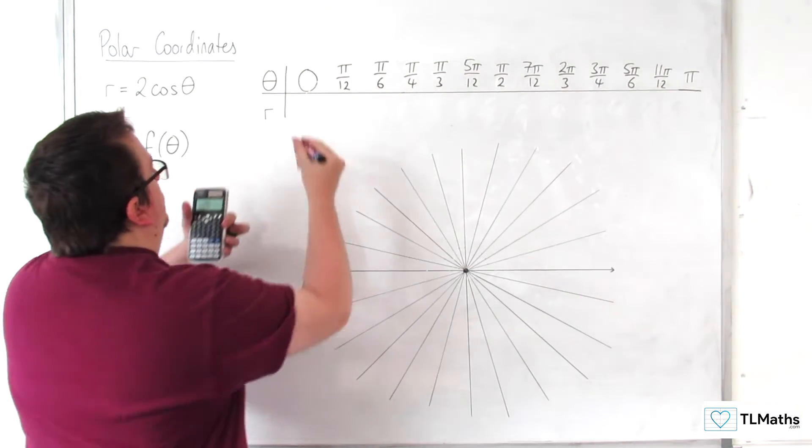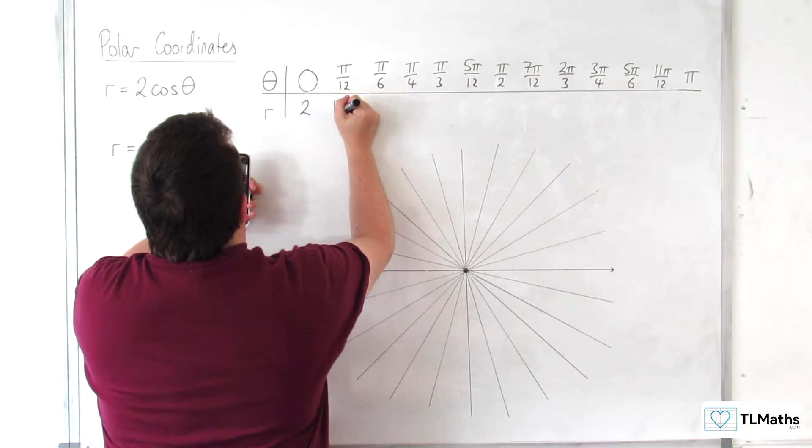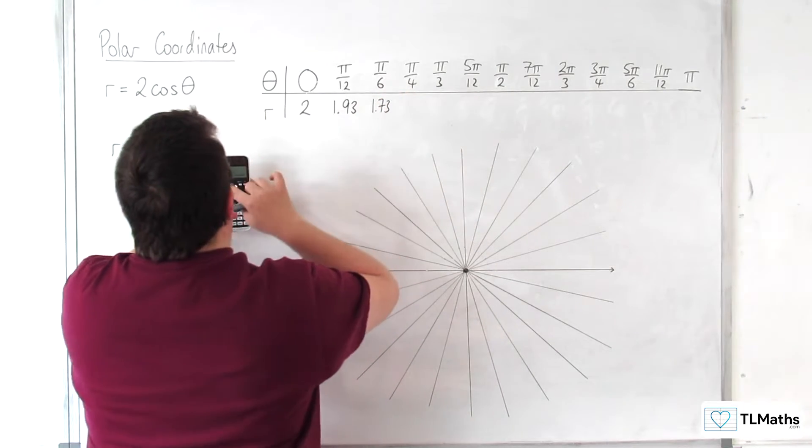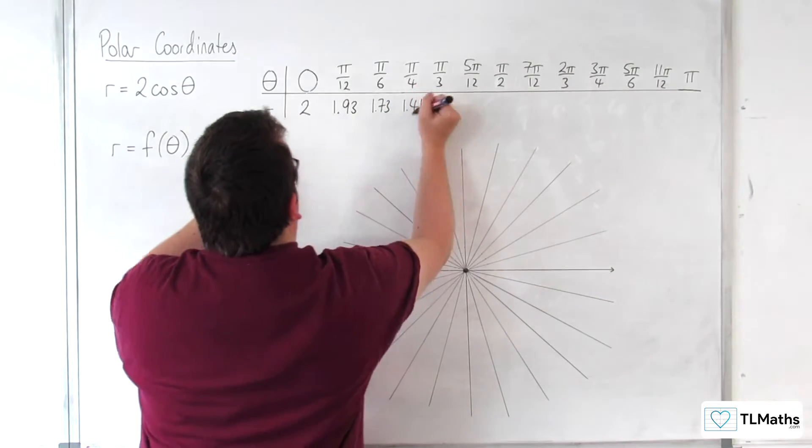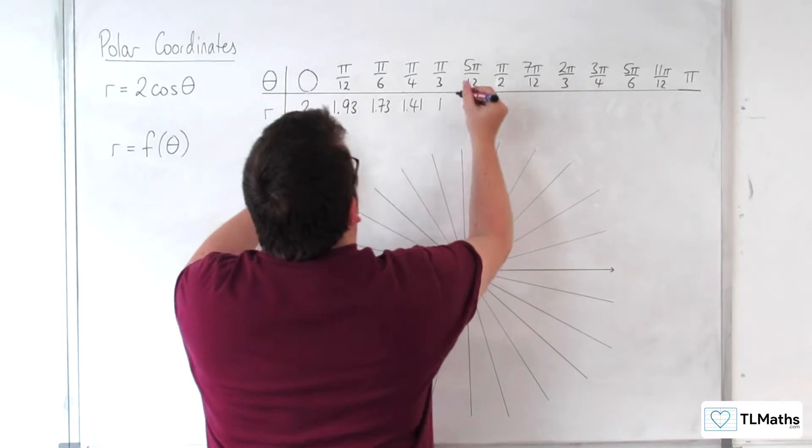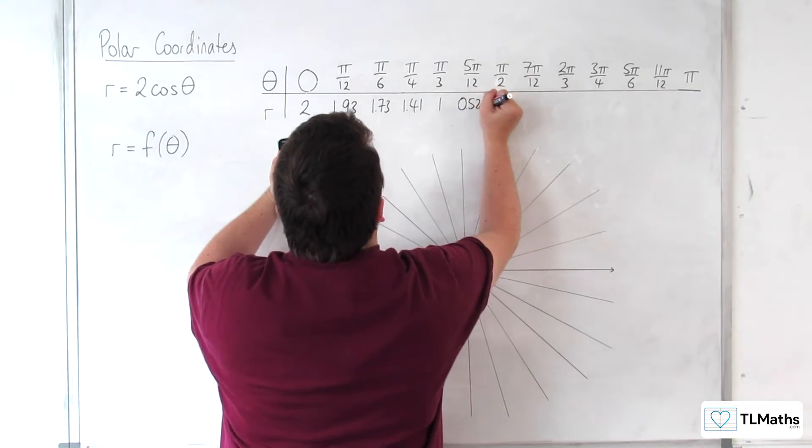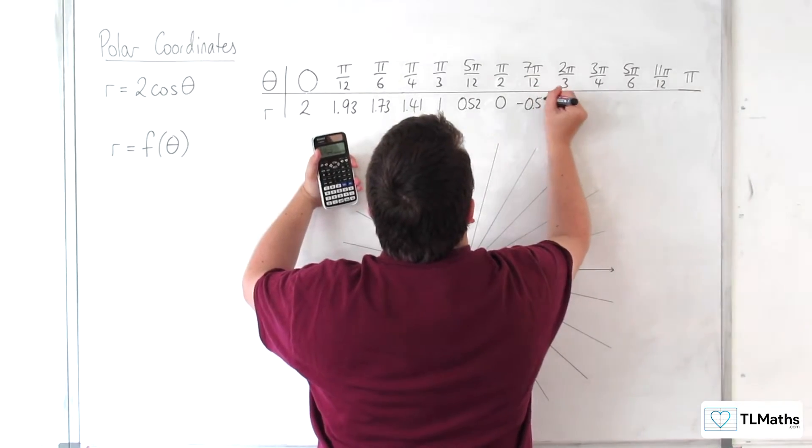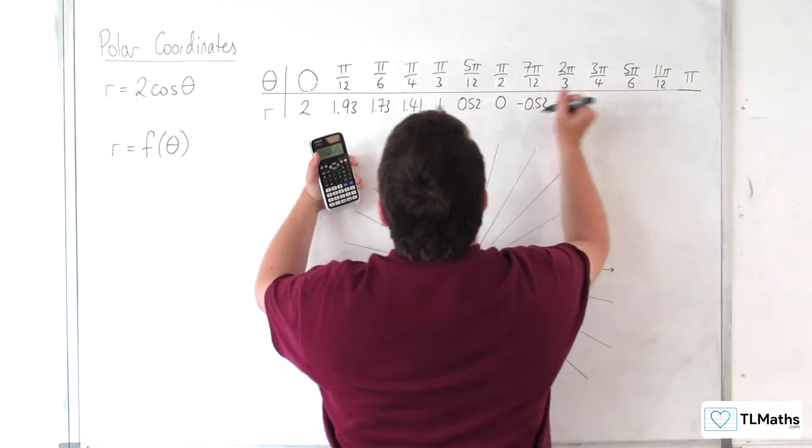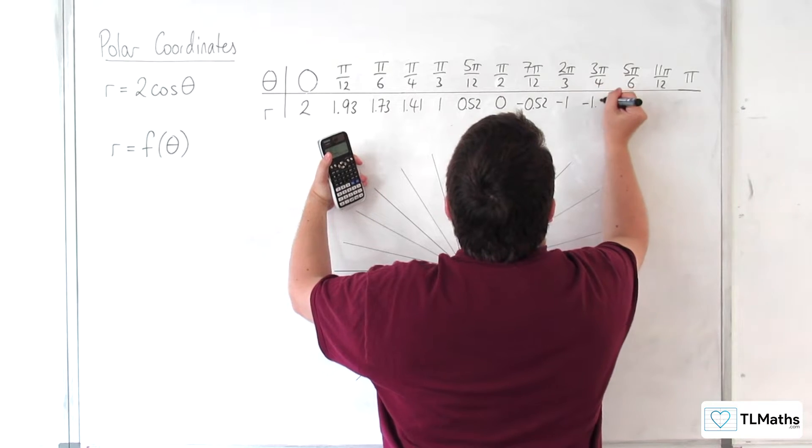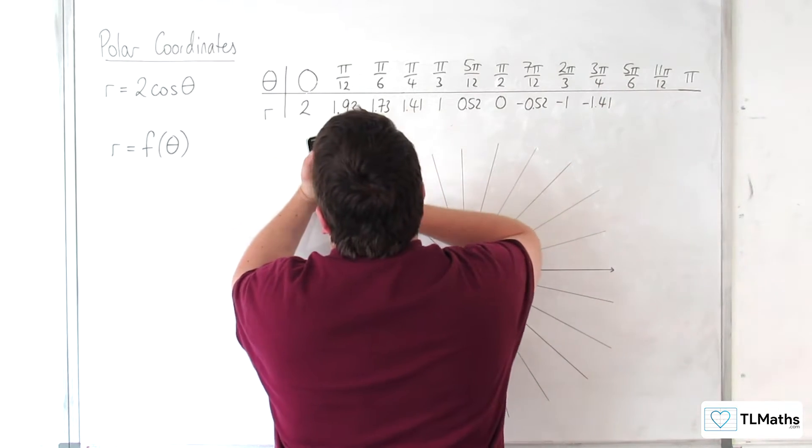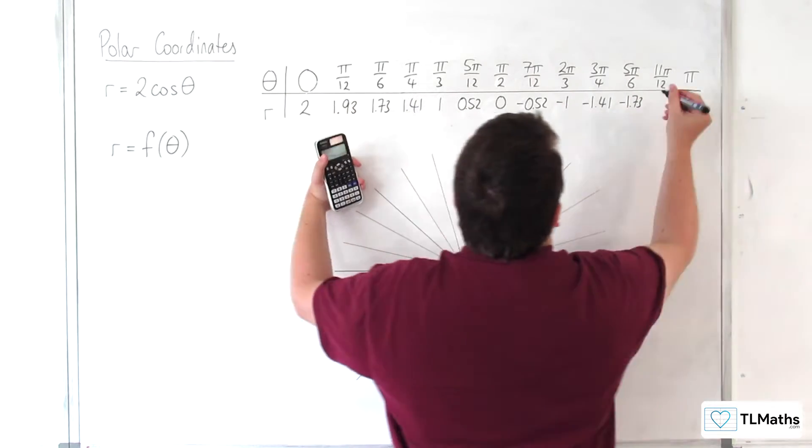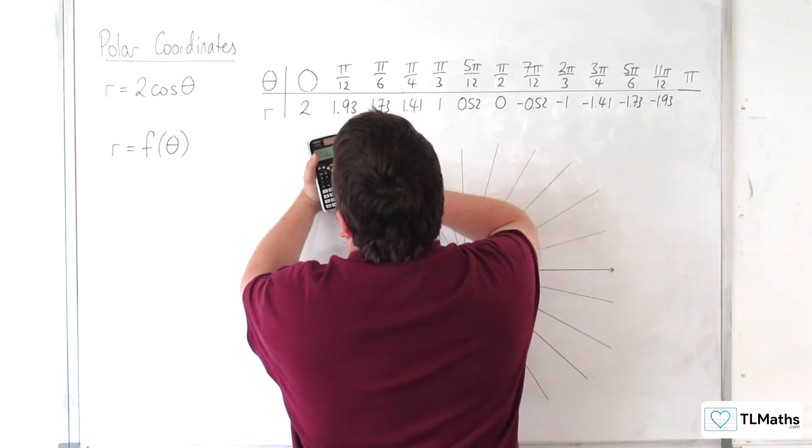So we get 2, then 1.93, I'm just going to go to two decimal places, 1.73, 1.41, then 1, then 0.52, then 0, then minus 0.52, then minus 1, then minus 1.41, minus 1.73, then minus 1.93, and then minus 2.